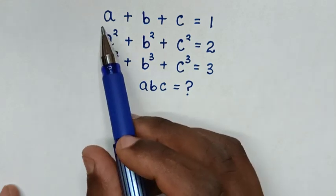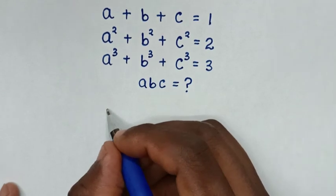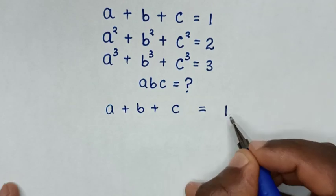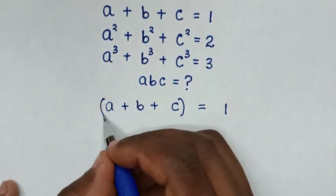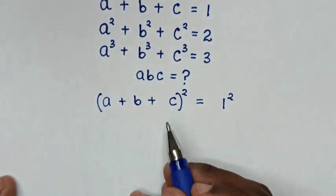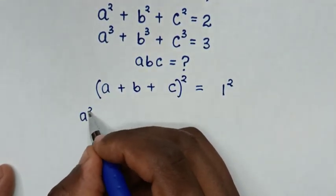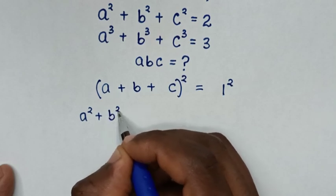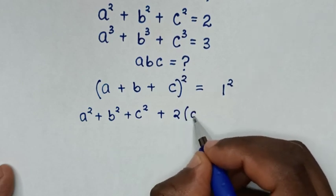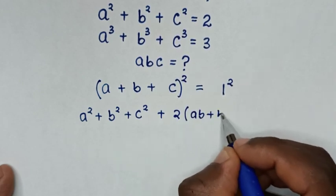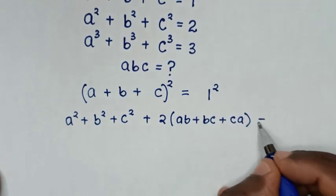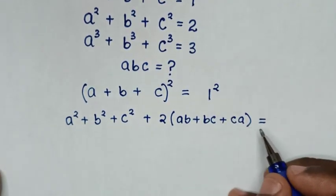In the first step, from the first equation, A plus B plus C equals 1, we square both sides. Then, (A plus B plus C)² equals A² plus B² plus C² plus 2(AB plus BC plus CA), which equals 1 squared, which is 1.